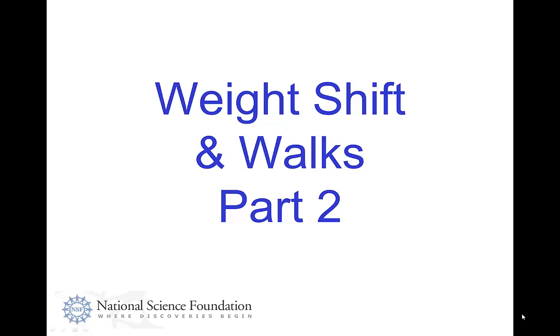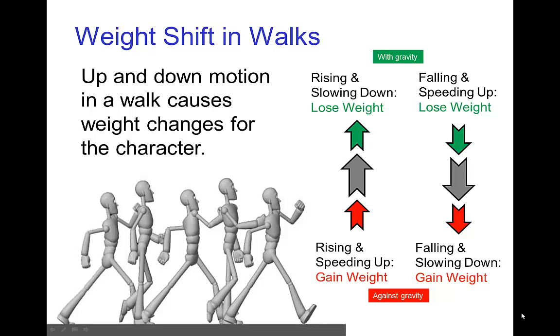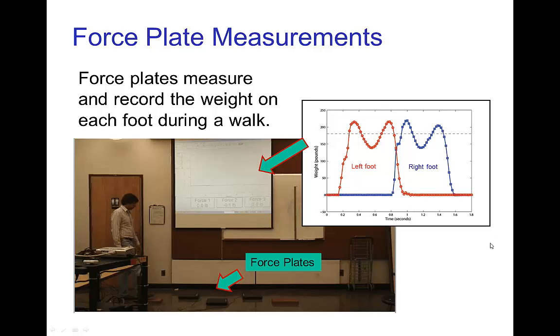Weight shift and walks, part two. So we saw in part one that there's a significant variation in weight during a walk depending on whether the up and down motion of the body is going with gravity or against gravity. And in fact, we were able to look at direct measurements of weight using force plates. So a volunteer walks over the force plates and their weight is measured in time as they pass over the force plates.